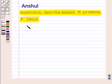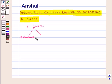A circle has two forms of equation: one is the standard form and the other is the general form. In each form, the equation of a circle has three independent arbitrary constants.